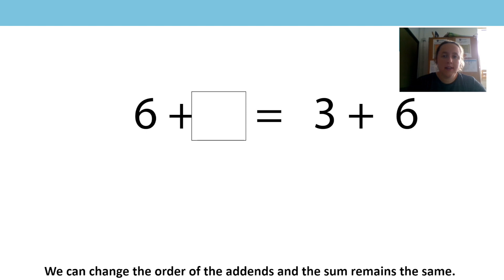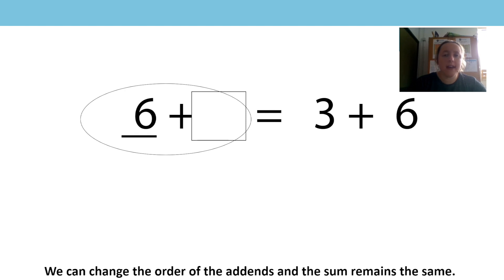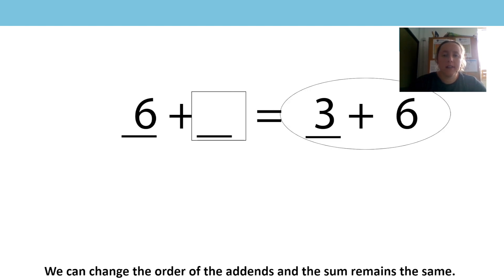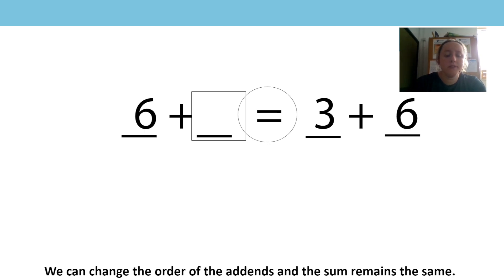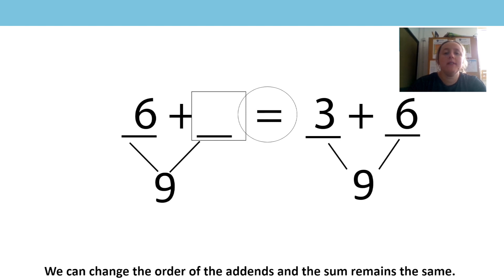Here is an equation: six add a missing addend is equal to three add six. What do you notice about this equation? Pause the video to think and discuss with someone if you can. Think about our generalisation: we can change the order of the addends and the sum remains the same. On the first side, there is a six and a missing addend. On the second side, three comes first and six comes second. Both sides must sum to nine, so the missing addend must be three.